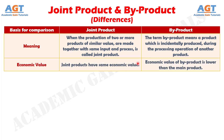No. 2: Joint products have common saleable values, and that is why none of them can be considered as the major product. Conversely, by-products' saleable value is comparatively lower than the main product.